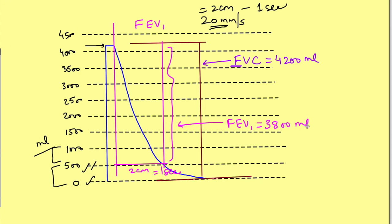With these values, let's calculate FEV1 by FVC ratio. Divide 3800ml by 4200ml and it comes to 0.90. Normally, greater than 80% of forced vital capacity is exhaled in the first second. Here it's 0.90 or 90%, which is normal. Clinically, if the value is less than 0.7, it signifies obstructive lung disease.